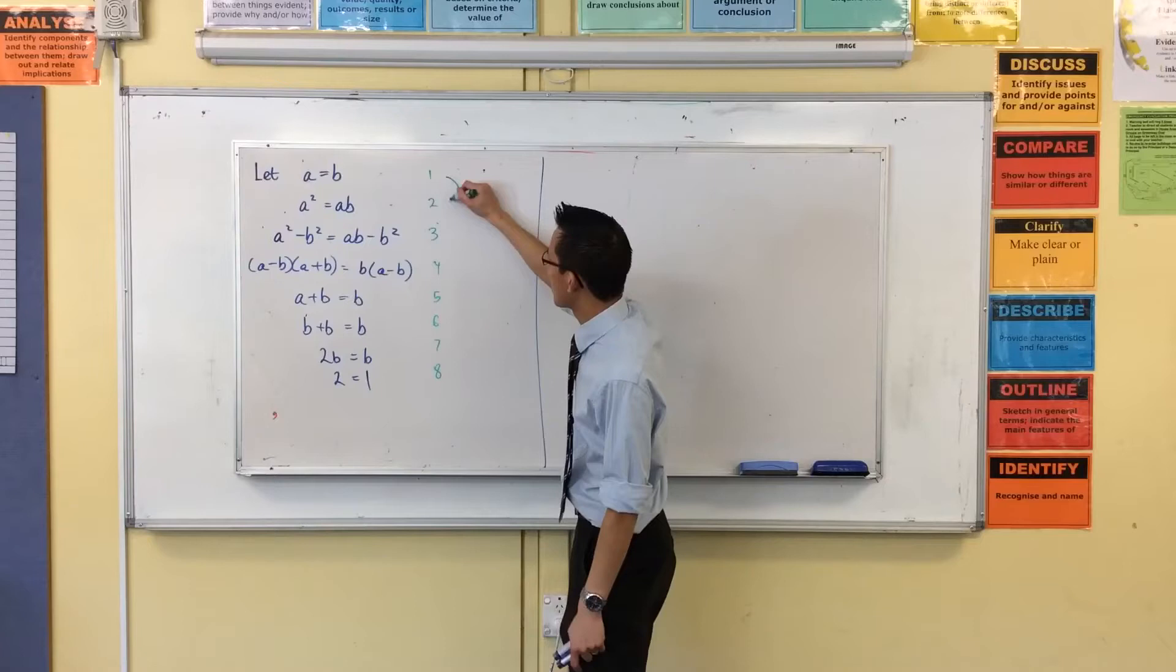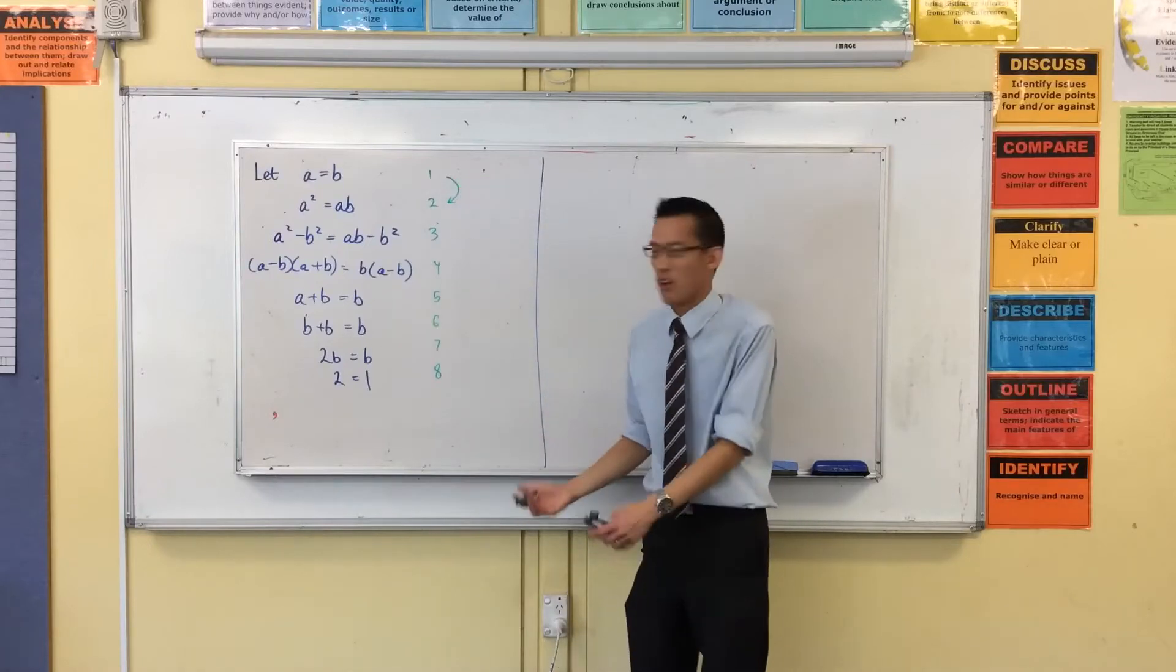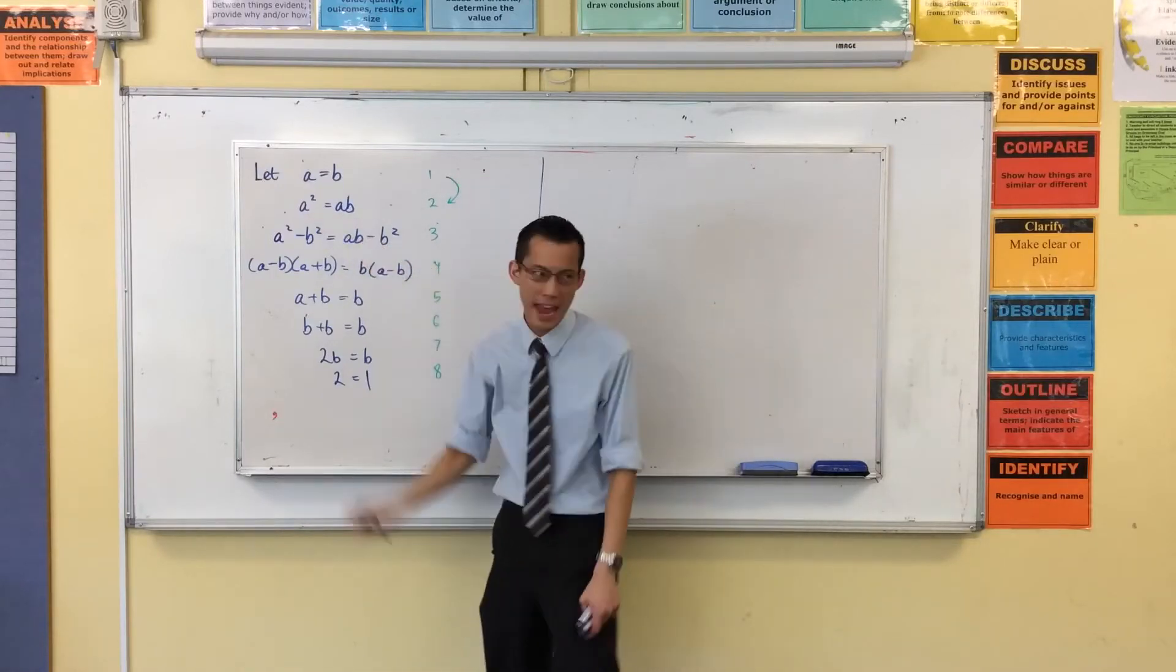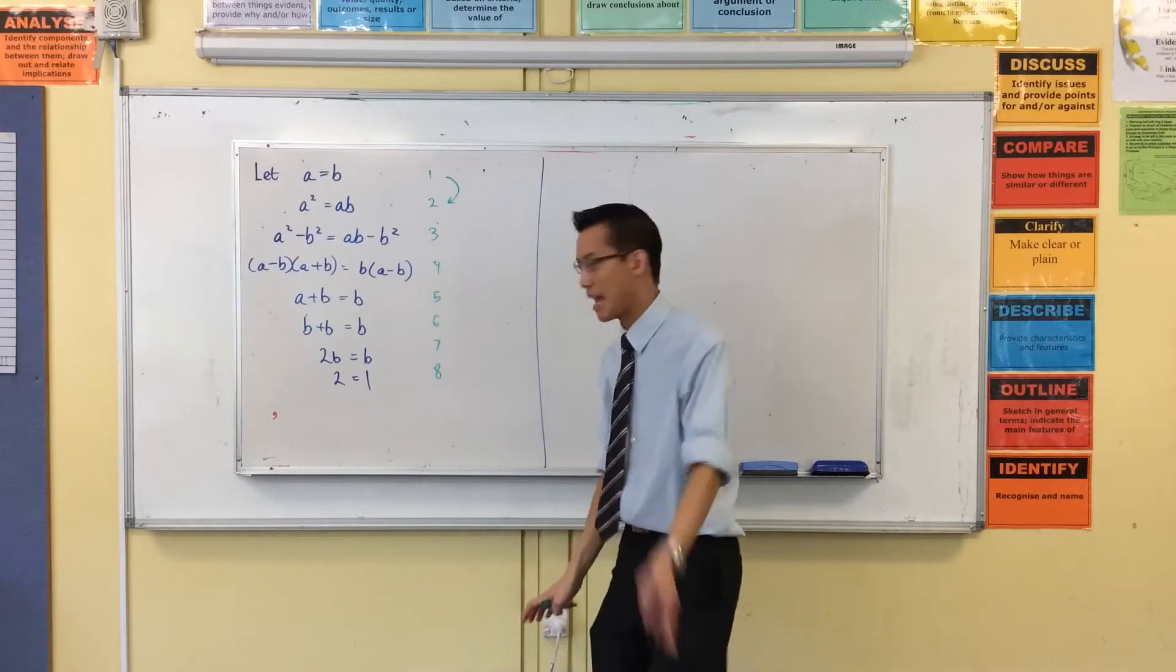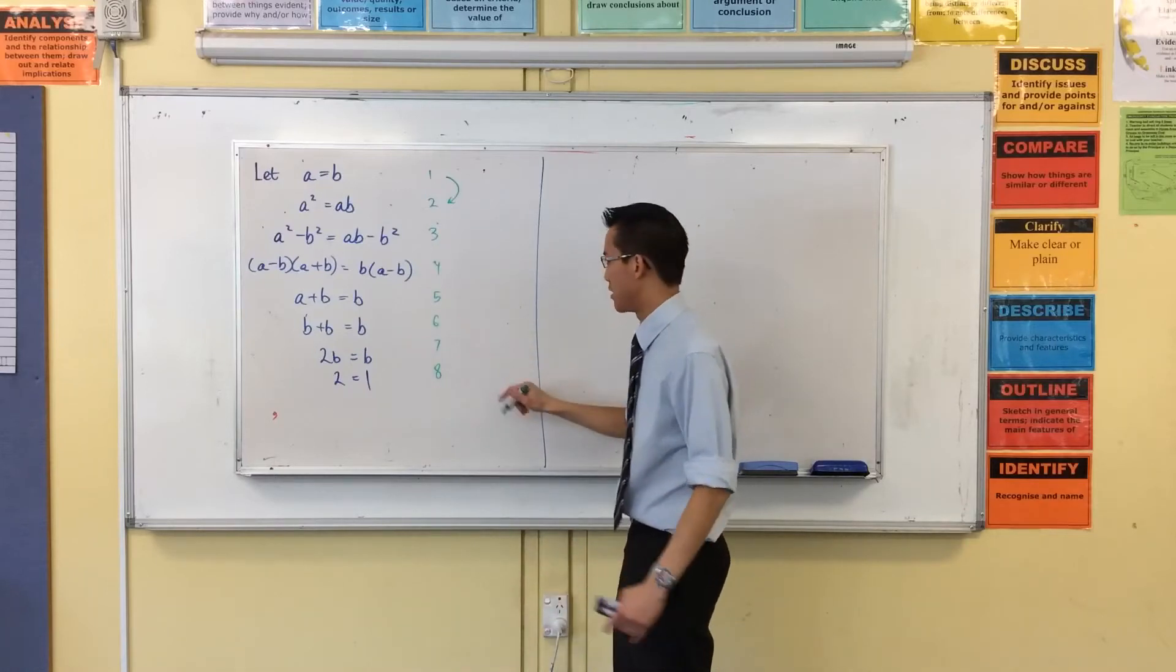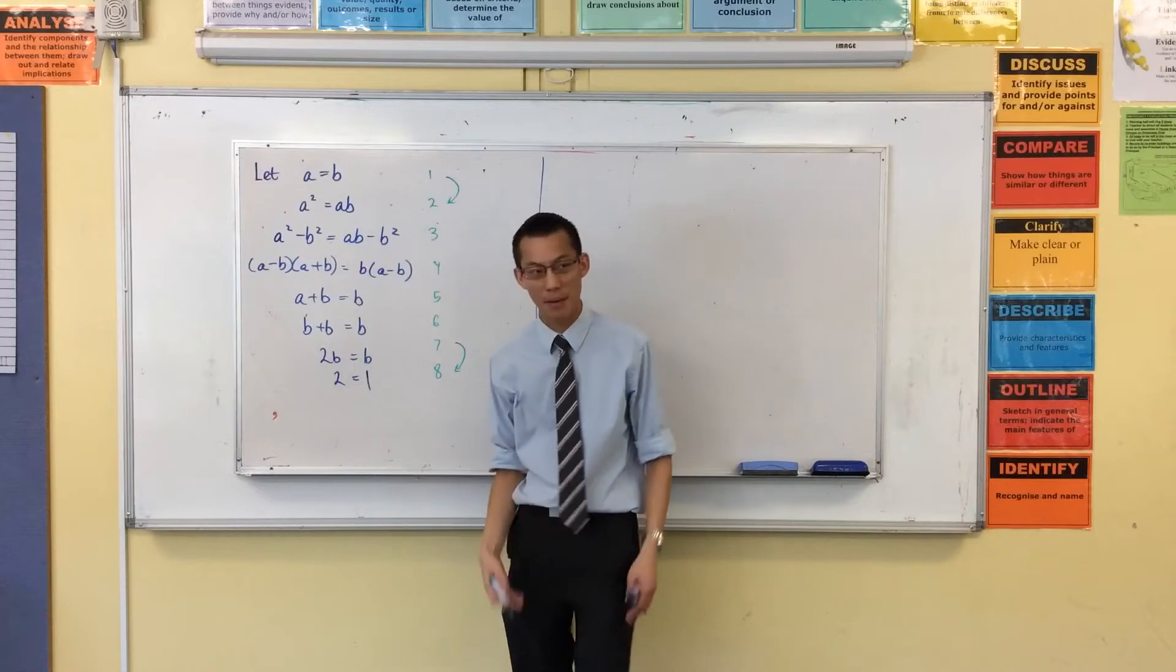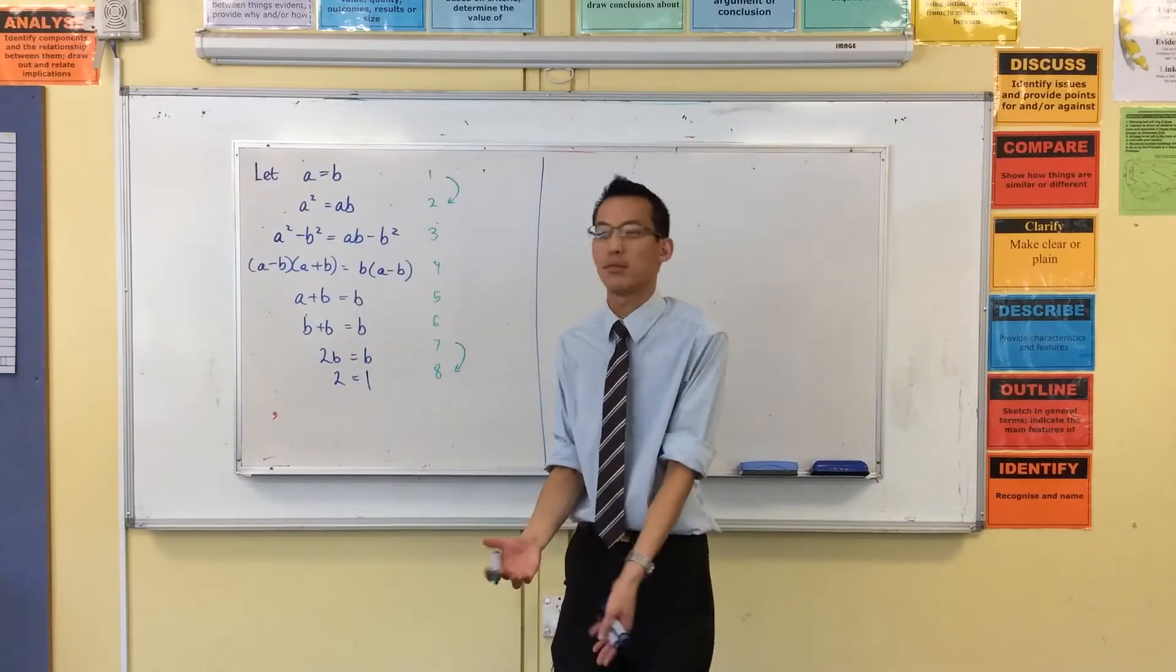So for example, going from this line to this line, clearly there's no issues. You can multiply both sides by A, no problems. In much the same way, line seven to eight, for instance, there's no issues because you can divide both sides by B, that's not going to cause you any problems.